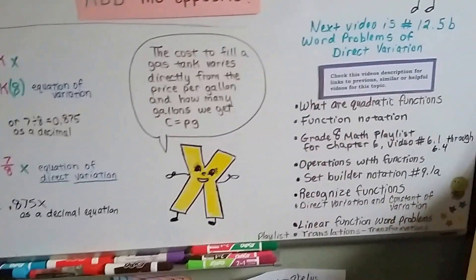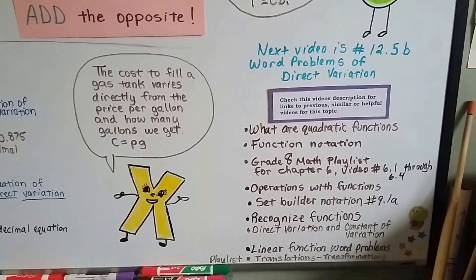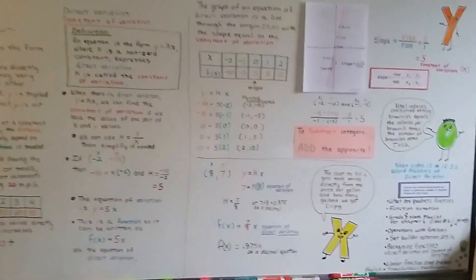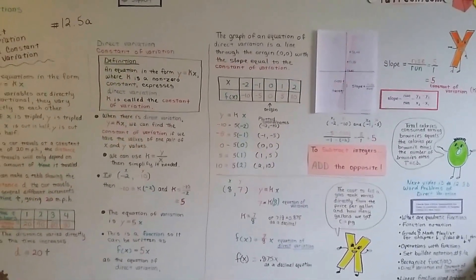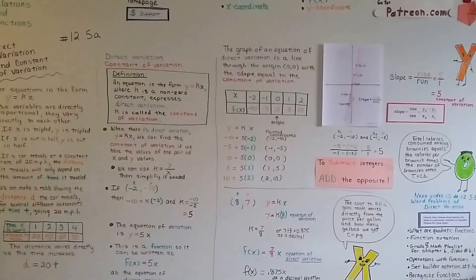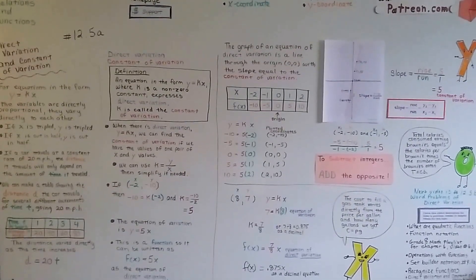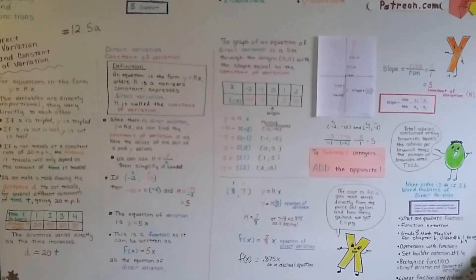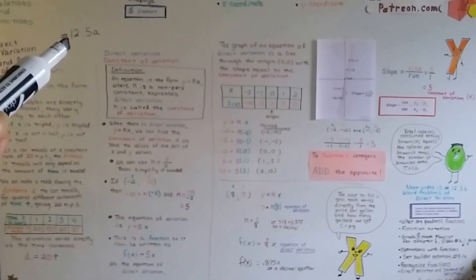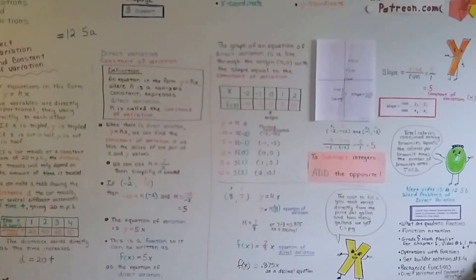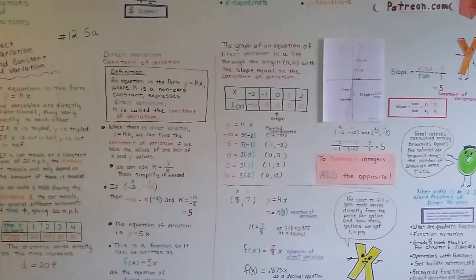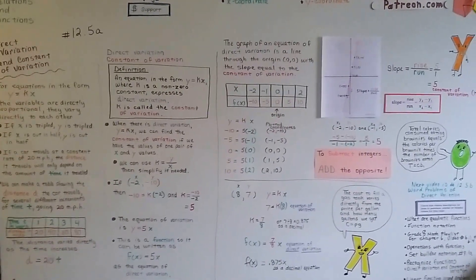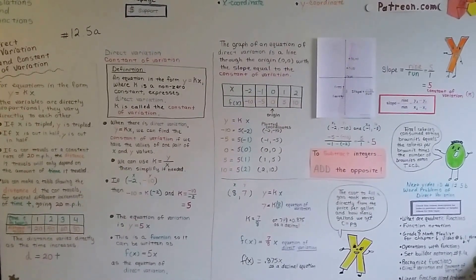The next video is 12.5b, where we'll talk about word problems of direct variation. Links in the playlist can get you extra help. If you're confused, you may have gotten ahead of yourself — go back to 12.1a. We've been talking about functions this whole chapter and have made about 15 videos. See you next video — keep your chin up, we're going to make it!